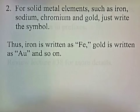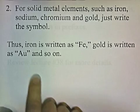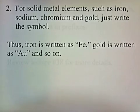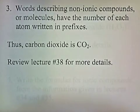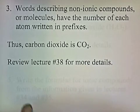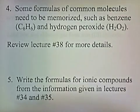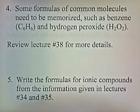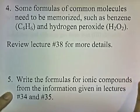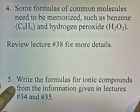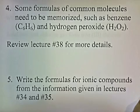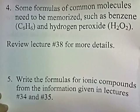For solid metal elements such as iron, sodium, chromium, and gold, you just write the symbol. So if you see the word iron, it's written as Fe; gold is written as Au, and so on. Words describing non-ionic compounds or molecules have the number of each atom written in prefixes — thus carbon dioxide is CO2. Some formulas of common molecules need to be memorized, such as benzene (C6H6) and hydrogen peroxide (H2O2). Review Lecture No. 38 for more details. You also need to be able to write formulas for ionic compounds from the information given in Lectures 34 and 35.